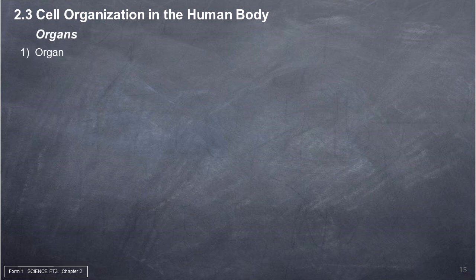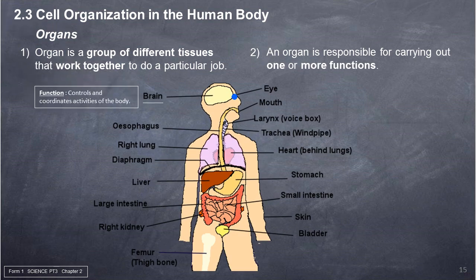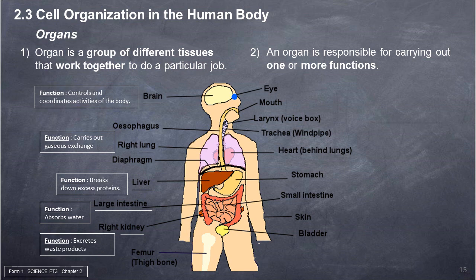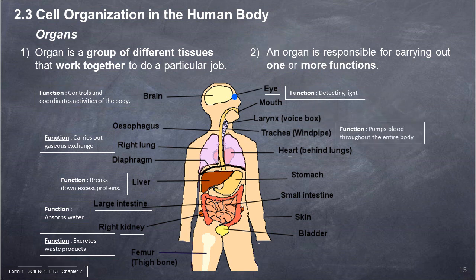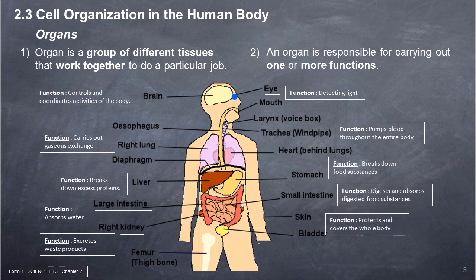Organs. 1. An organ is a group of different tissues that work together to do a particular job. 2. An organ is responsible for carrying out one or more functions. Examples — brain: controls and coordinates activities of the body. Lungs: carry out gaseous exchange. Liver: breaks down excess proteins. Large intestine: absorbs water. Kidney: excretes waste products. Eyes: detecting light. Heart: pumps blood throughout the entire body. Stomach: breaks down food substances. Small intestine: digests and absorbs digested food substances. Skin: protects and covers the whole body.